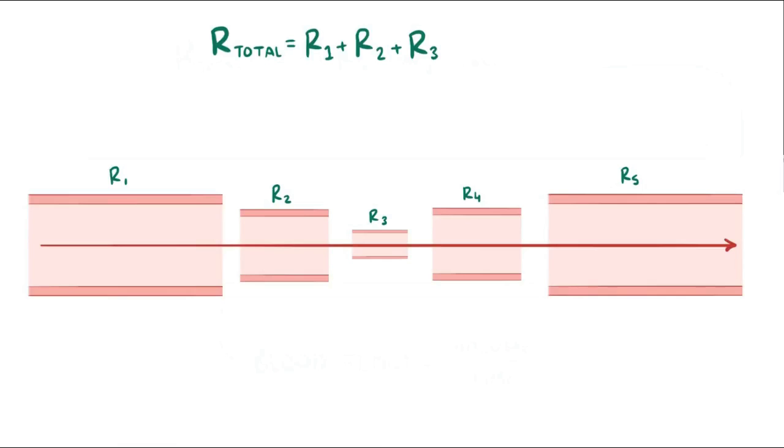So that's how resistance works for a single vessel. But what if you have a bunch of different sized vessels in a row, each with their own resistance, and you wanted to figure out the total resistance? Well, since they're all in a row, one after another, we say that they're in series, and you simply add the individual resistances all together to get a total resistance. This total is called the serial resistance.